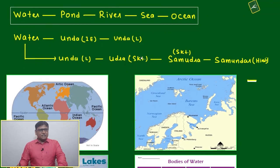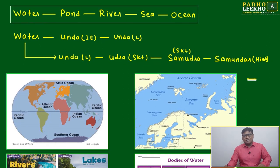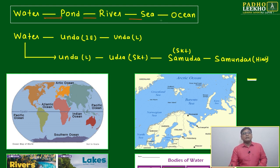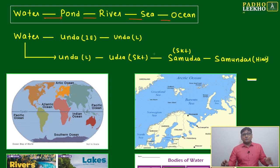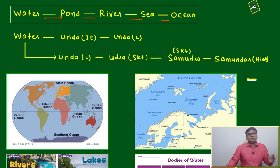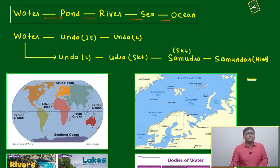Now we come to the next system — the logical understanding of non-living things on Earth's surface. The second sequence is water bodies: pond, river, sea, and ocean. Ocean is the largest water body; sea is a subset of ocean, river is a subset of sea, pond is a further subset, and water is the smallest unit.